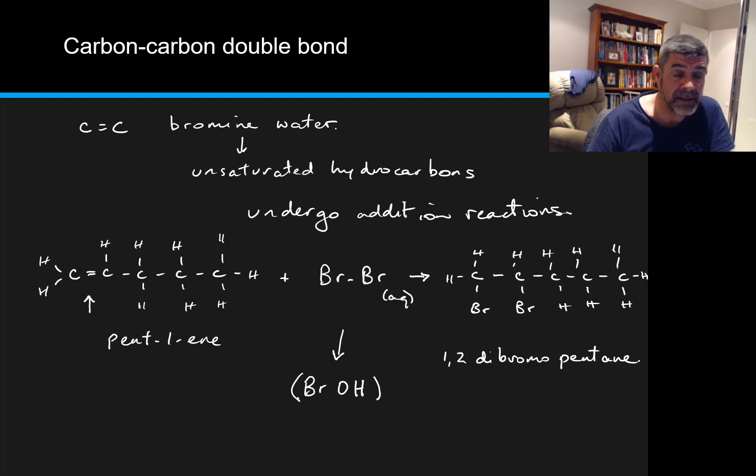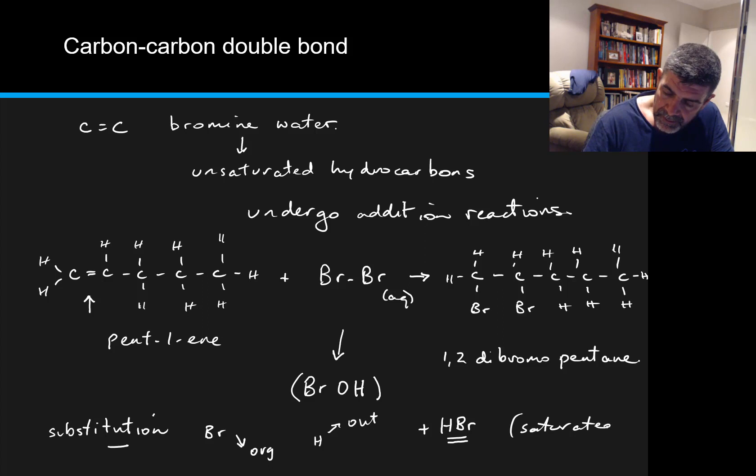Of course, what happens if the substance that we're testing is a saturated hydrocarbon? Well, firstly, we won't have a reaction. Certainly we won't have a spontaneous reaction, unless we have the presence of ultraviolet light. And if we do, then what we may find is we have a substitution reaction. And for a substitution reaction, what we're doing is one of the bromines is going to go into the organic structure, and the hydrogen is going to come out. And therefore, we're going to have a second product, not just an organic product. We're going to form hydrogen bromide, HBr. So this is what we get if we have a saturated hydrocarbon.